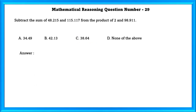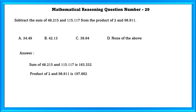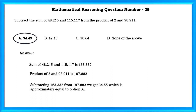Question No. 29: Subtract the sum of 48.215 and 115.117 from the product of 2 and 98.911. The sum of the two numbers is 163.332, and the product of 2 and 98.911 is 197.822. Subtracting gives 34.55, which is approximately equal to option A.